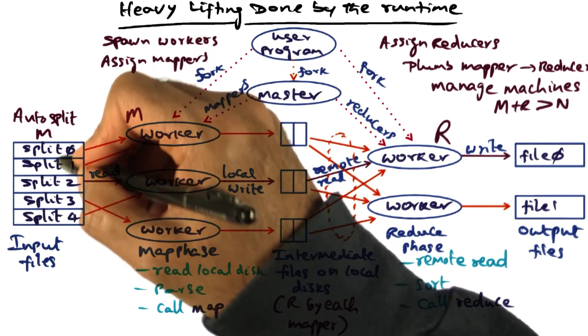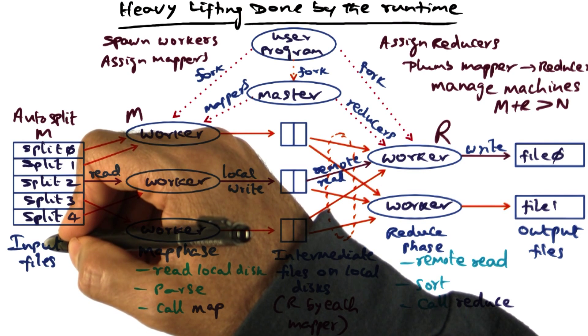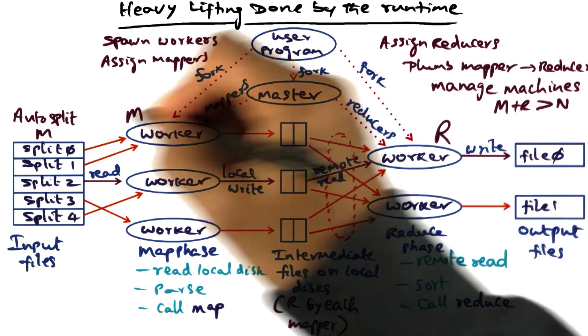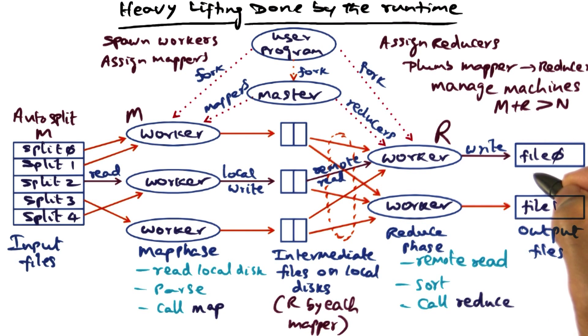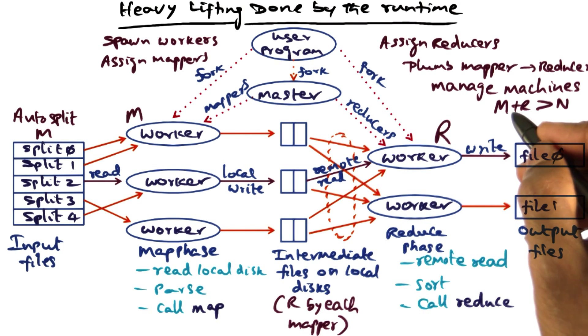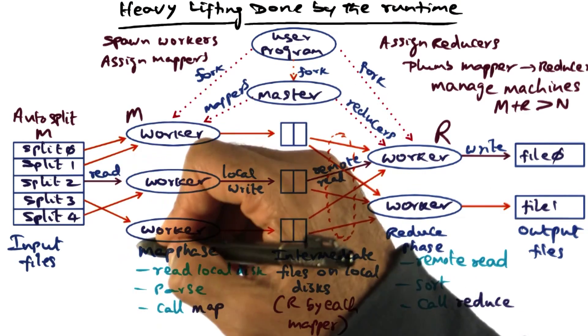We said that there could be M splits of the input data set, meaning the input key value pairs. And there could be R splits of the output that has to be generated by the application as a whole. Now the computational resources that are available in the data center, N, may be less than the sum M plus R. So they may not be a unique machine to assign for each one of the M splits that have been made.